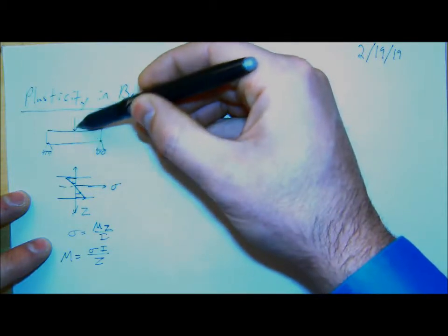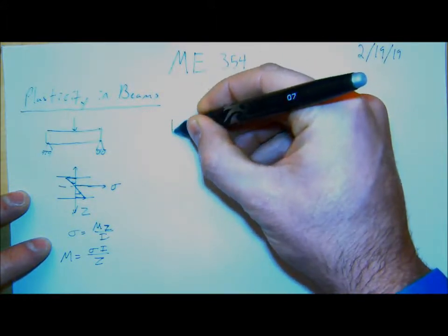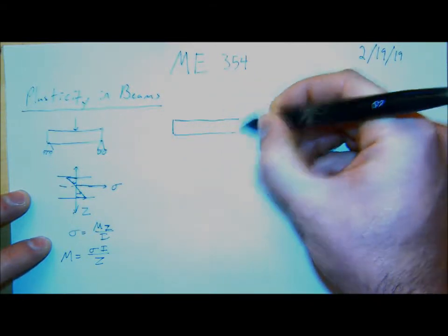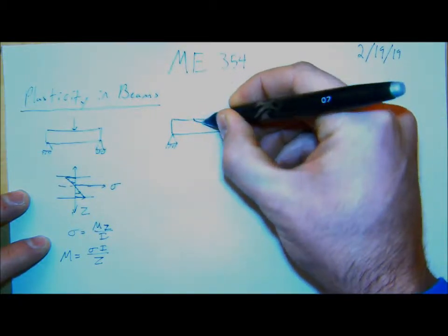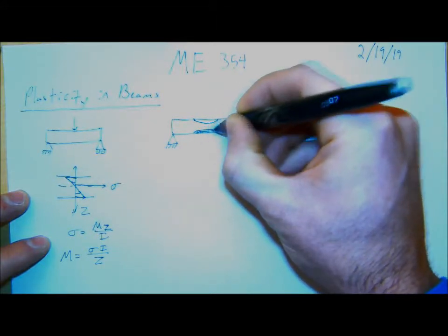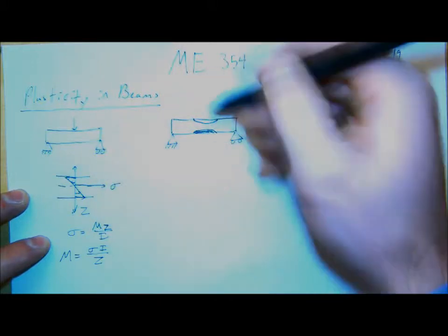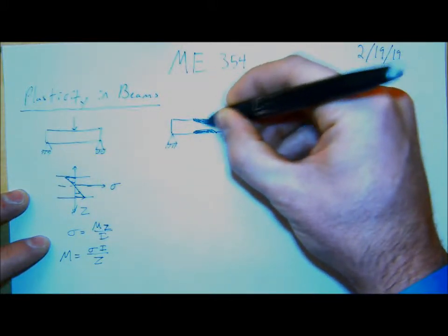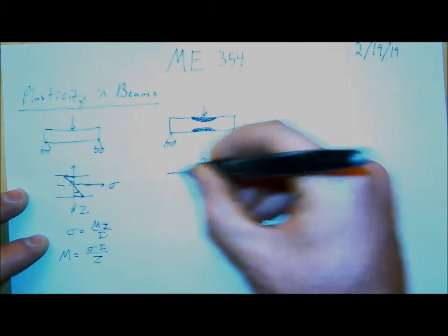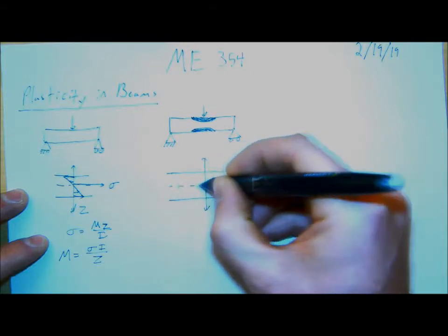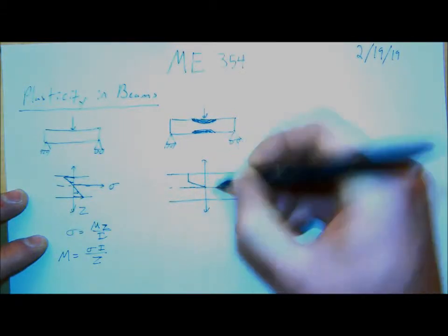If I keep applying a higher moment to the beam, eventually you'll start to get plastic deformation happening. The plastic deformation will happen in some region of the beam — particularly for this three-point bending configuration — because the moment is highest in the center of the beam. There'll now be some distribution where it'll be plastic on the outside and elastic inside. This is assuming the plastic and compressive yield strengths are the same.